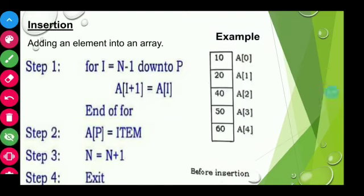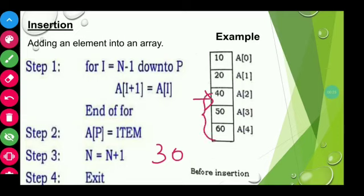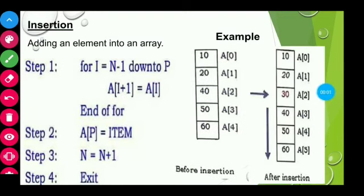Let us apply this algorithm with one example. This array contains 5 elements. Suppose I want to insert a new element, say 30, at position a[2]. Right now I can't insert this element as there is no place in the array. So I must shift all the elements from this specified position — that is a[2], a[3], a[4], elements 40, 50, 60 — to their higher order positions. Then 30 will be inserted at its position. See here: 30 is inserted at position a[2] and the array size is incremented by 1.